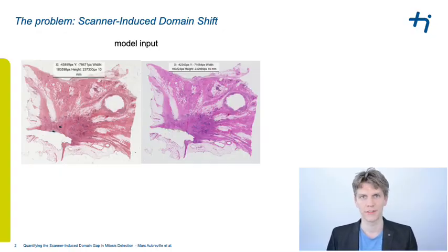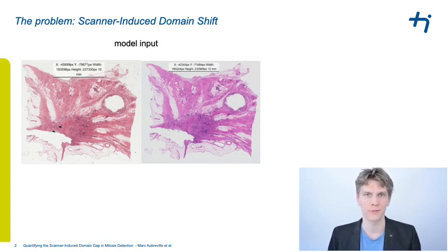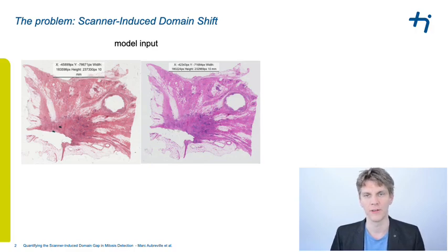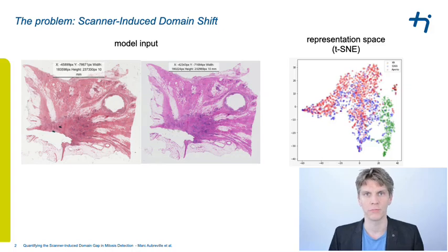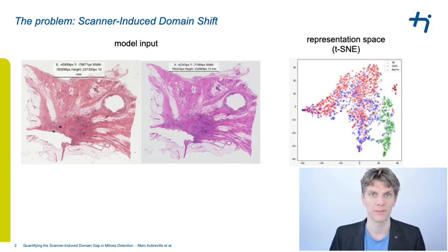If you also work in the field of digital histopathology, you might already know the issue. If you look at slides from different laboratories, you will certainly have found that they look vastly different. This difference in visual representation leads, if you train a deep learning model, to a difference in the representation space. This domain shift or domain gap, when talking about detection, can severely deteriorate your results and hinders robustness.